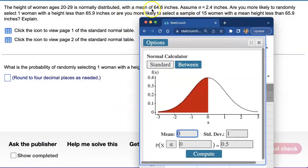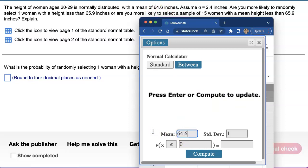So they said the mean is 64.6 inches. I'll type in 64.6 for the mean and the population standard deviation is 2.4.